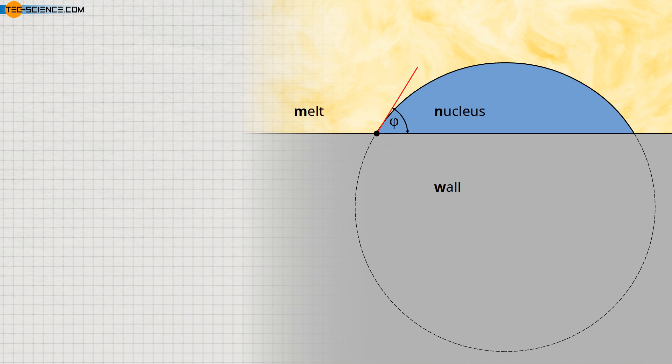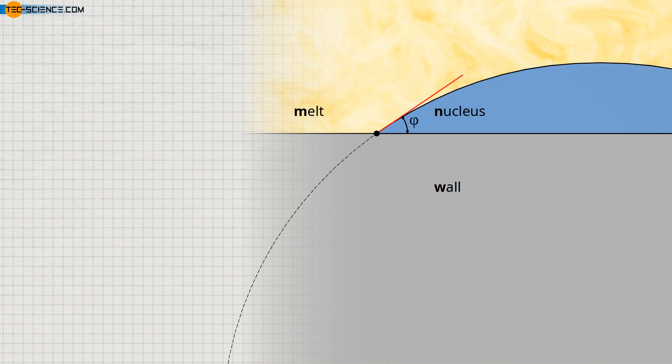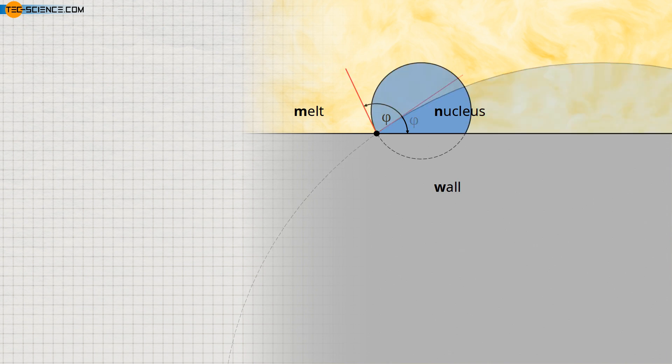Depending on the interaction between the nucleus, melt, and wall, the wall may be very strongly wetted by the nucleus, resulting in a small contact angle, or only slightly wetted, resulting in a large contact angle. This affects the shape of the spherical cap.